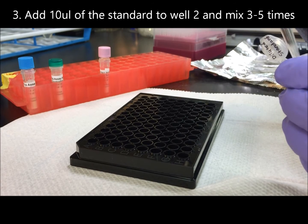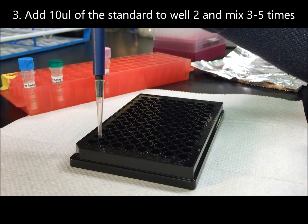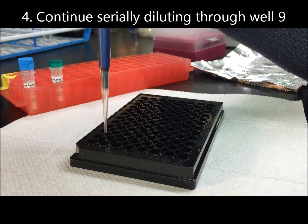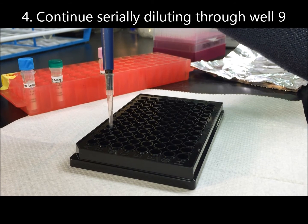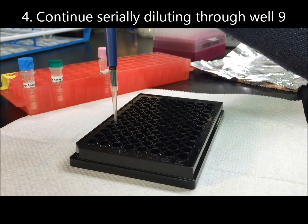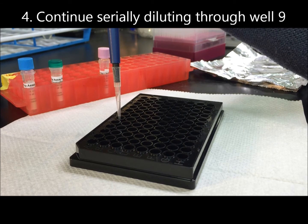Then add 10 microliters of the standard to well 2 and mix well 3 to 5 times. Continue serially diluting through well 9. Pipette gently to avoid any bubbles.